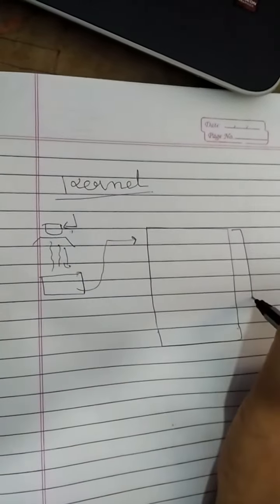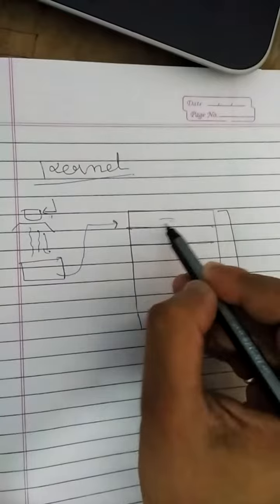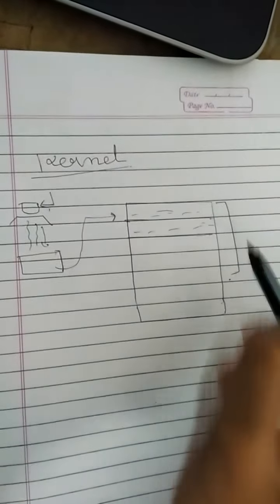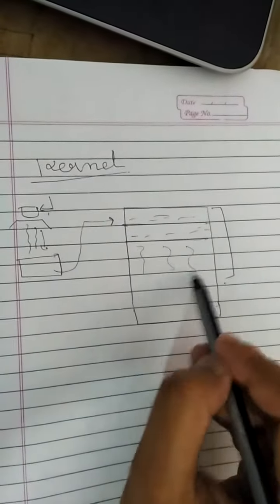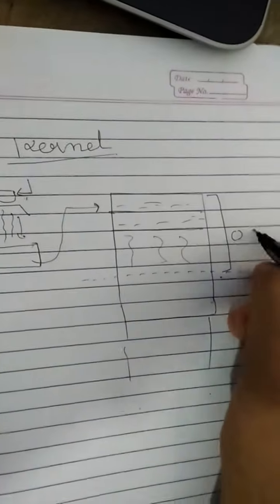The operating system has a core part which is called the kernel. Let's say the kernel gets loaded here, and the remaining part gets loaded in the rest of the space. This is the operating system, and this is the part of the operating system which is called the kernel.